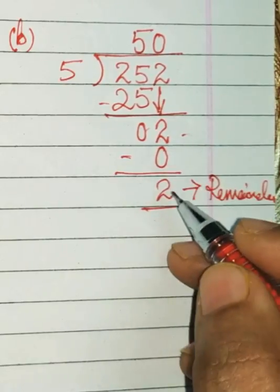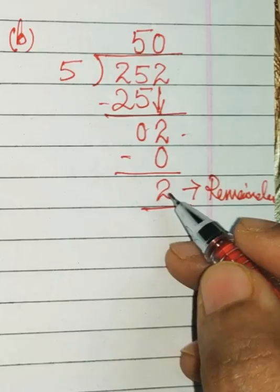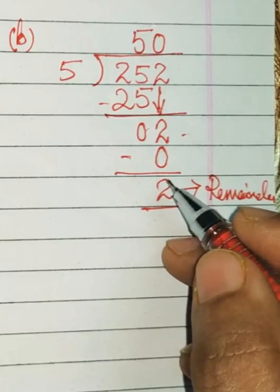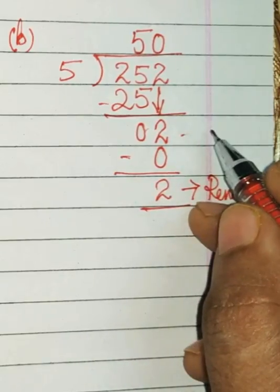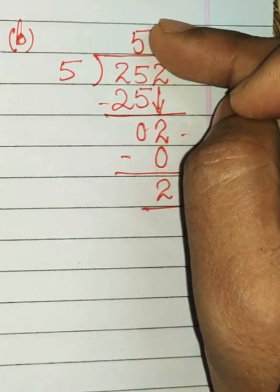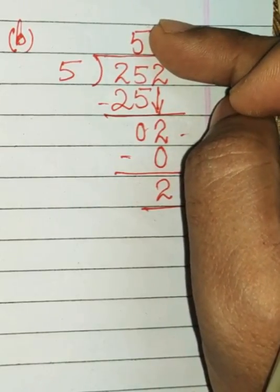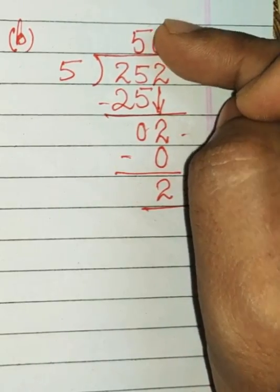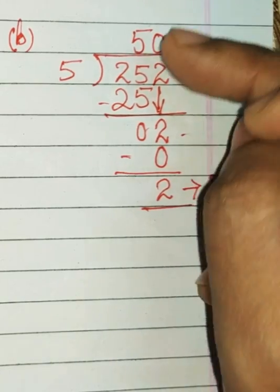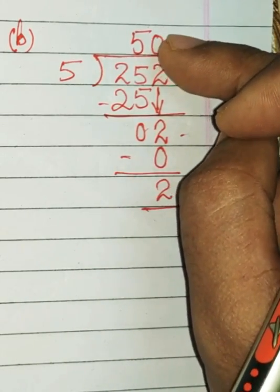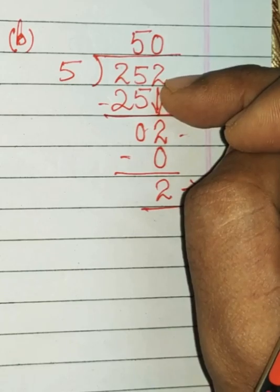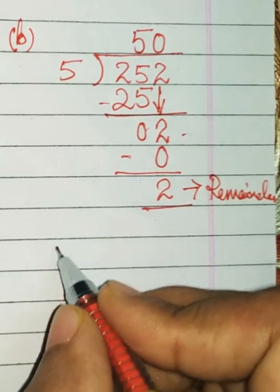Why we will write after subtracting 0? This is because if you write it here as remainder, the quotient will be looking as 5, whereas the quotient is 50. 5 fifties are 250 and the remainder 2 you add. I'll show you by checking; you will be clear then.